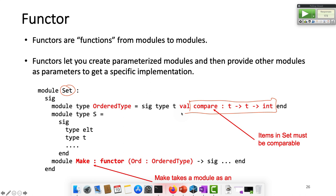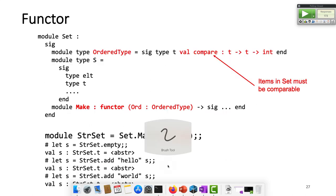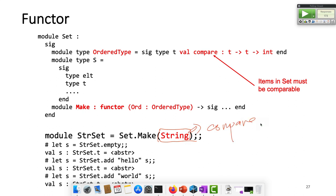The set will take — look at this Make function. The Make function takes a module that tells you how to compare. For example, this is saying I'm going to create a set that only takes strings. So string is a module — it has a compare method.